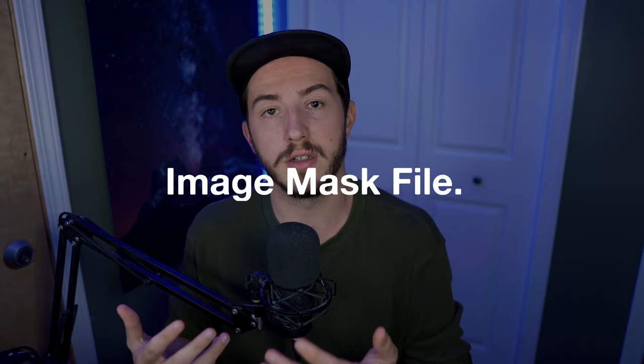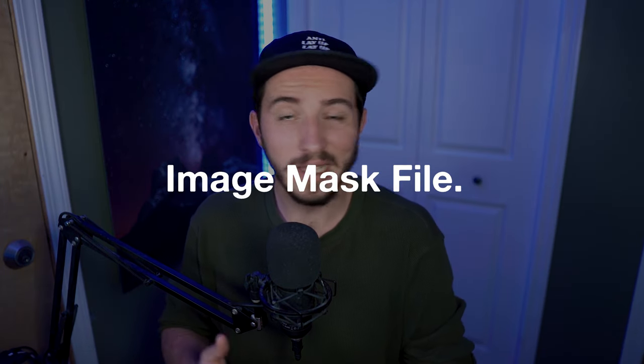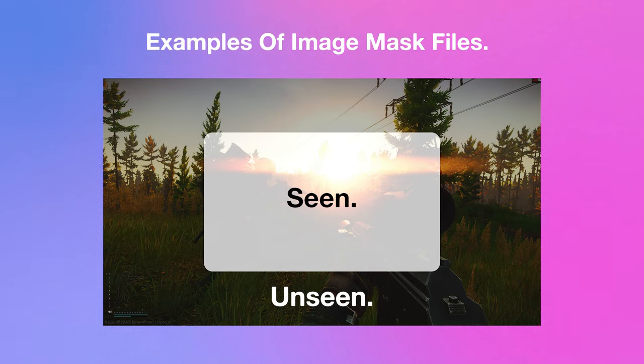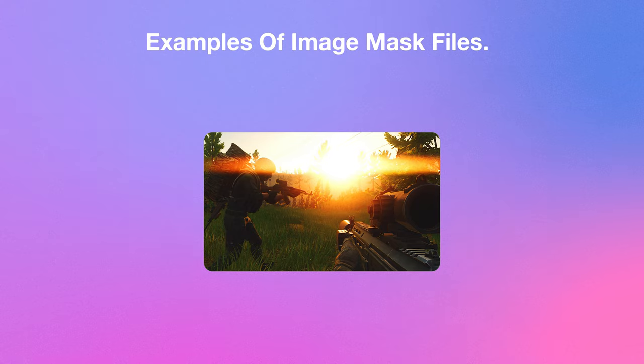So how does using an image mask in OBS actually work? It's quite simple. All you'll need is an image mask file — just a JPEG or PNG that has black and white on it. The way it works is whatever is white on that JPEG or PNG, OBS will show that in the source, and anything that's black, it will hide.